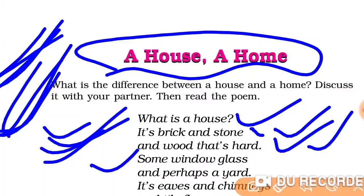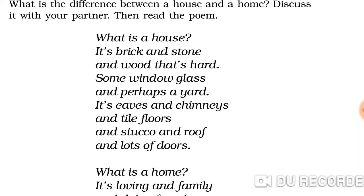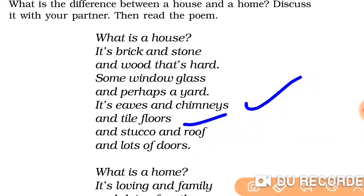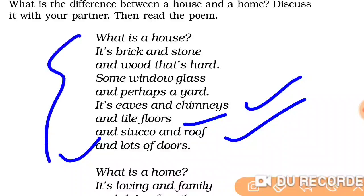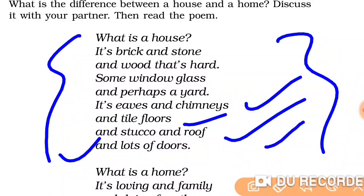What else is in the house? We find window glass — some windows, and windows are made of glass. And perhaps a yard — a yard is also there in a house. It has eaves and chimneys also. And tile floors — floors are also there, they may be simple. And stucco and a roof, and lots of doors. So a house is made of brick, stone, wood, window glass, yard, eaves, chimneys, floors, stucco, roof, and lots of doors.